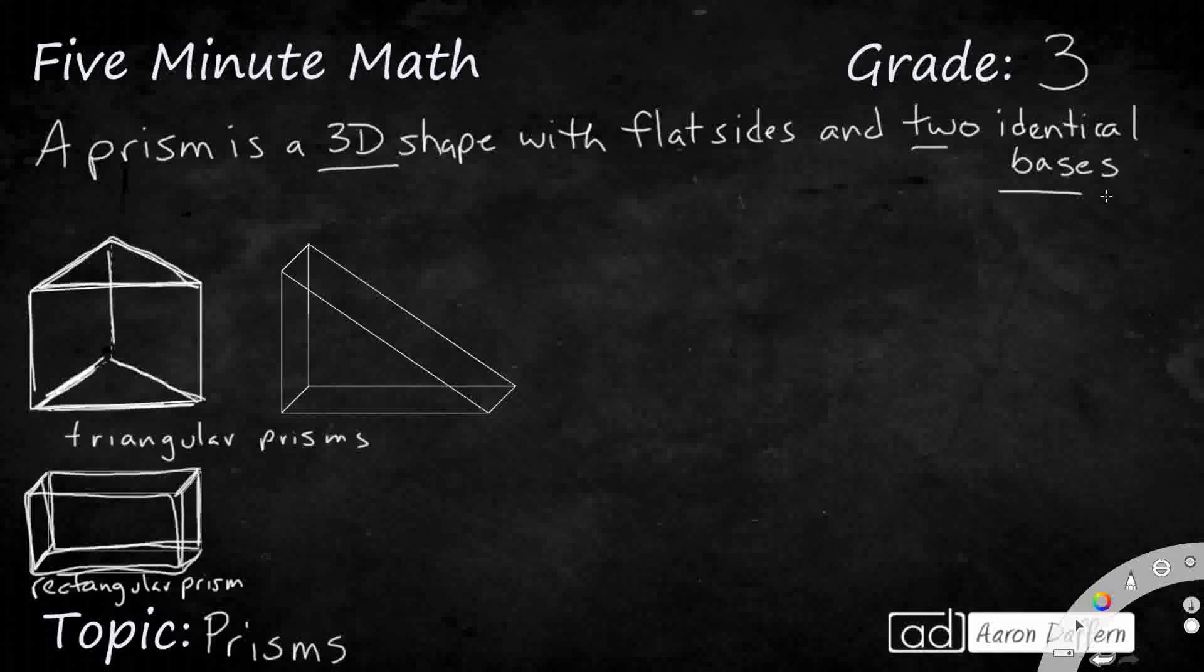But this is also a triangular prism over on the right. It just happens to be sitting on one of its rectangular faces. So you see, I've got one triangular base right here. And then I've got another triangular base back here, but it's, like I said, sitting on one of its rectangular faces. So both of those are triangular prisms.